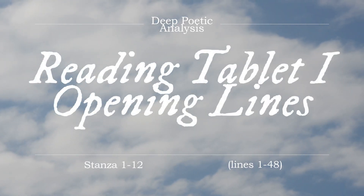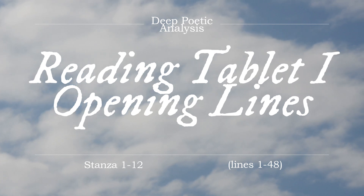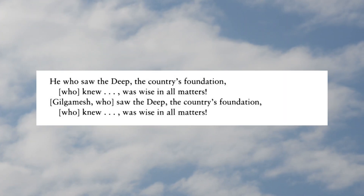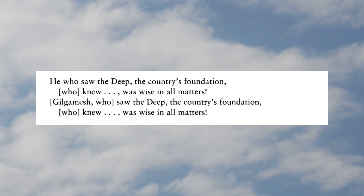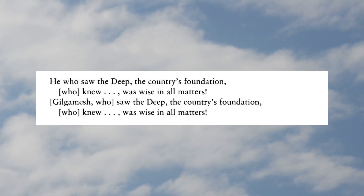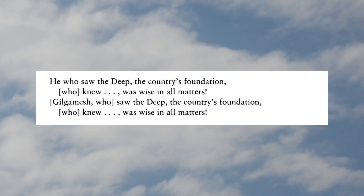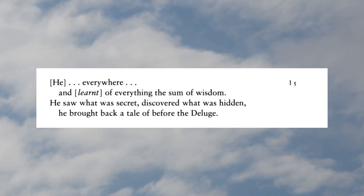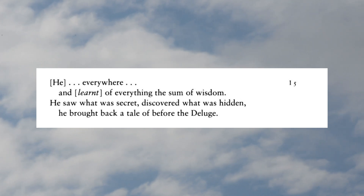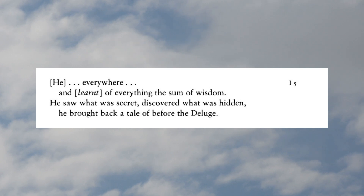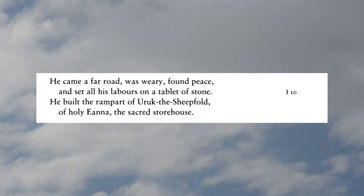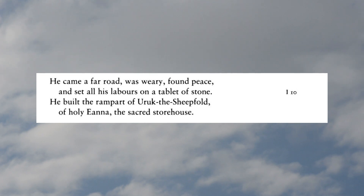I'm going to read the first few stanzas of the Epic of Gilgamesh Tablet 1 and then go over some points for the introduction. 'He who saw the deep, the country's foundation, who knew, was wise in all matters. Gilgamesh, who saw the deep, the country's foundation, who knew, was wise in all matters. He, everywhere, and learned of everything, the sum of wisdom. He saw what was secret, discovered what was hidden. He brought back a tale of before the deluge. He came a far road, was weary, found peace, and set all his labors on the tablet of stone.'